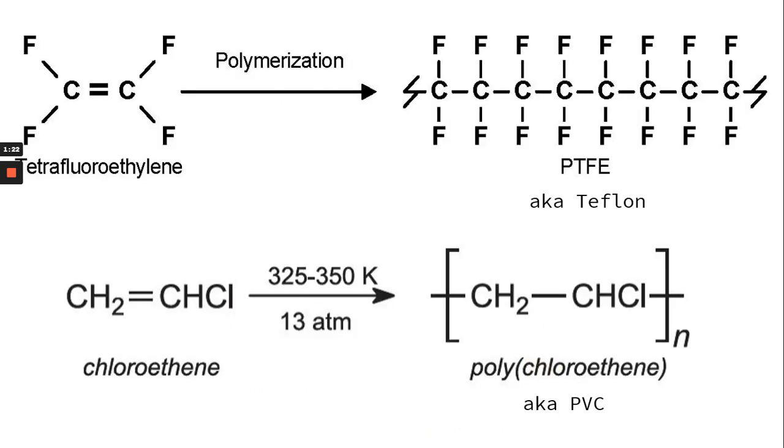So here are some examples. So Teflon is made from tetrafluoroethylene. That double bond will break allowing the carbon to bond again on either side. So here is the monomer and then it's repeated three more times.